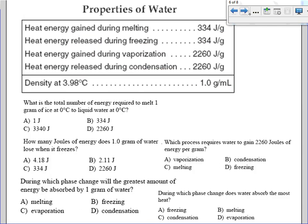Let's look at a couple examples. What is the total number of energy required to melt one gram of ice at zero degrees Celsius to liquid water at zero degrees Celsius? Heat energy is gained during melting, so that's 334 joules per gram. Your best choice is B, 334 joules.